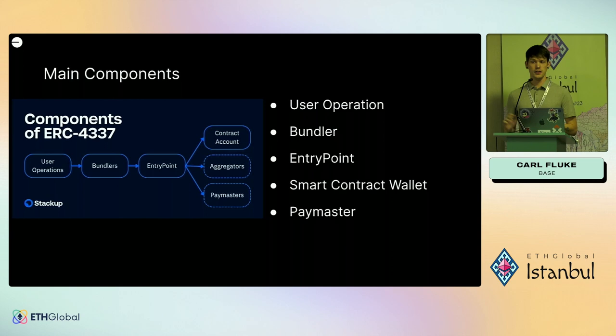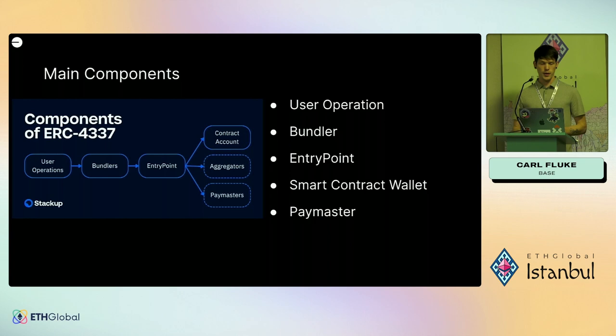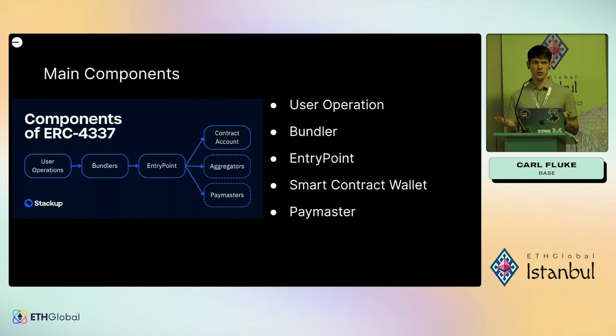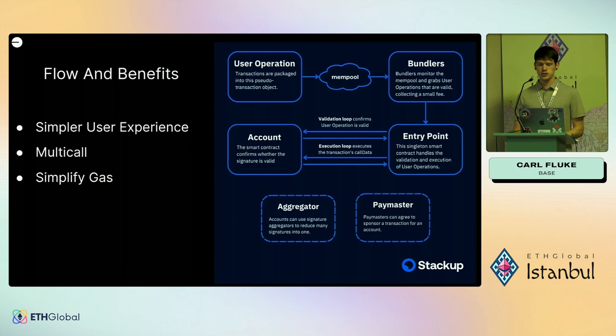Next is your smart contract wallet. If anybody was here for the Safe presentation, they were talking about how you can have your smart contract wallet with modules and plugins. Base doesn't make our own — we have ecosystem partners make that. In my example I used Alchemy's Light Account wallet. You can also choose to build your own, or use Zero Dev, which is another popular option. And then lastly is the paymaster: it lets you estimate gas on user operations and have the paymaster pay for it, so users can transact without funding a wallet or even knowing what a wallet is.